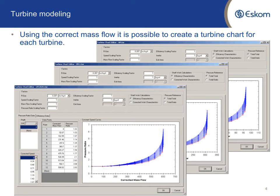This is just the mass flow through each turbine that I used to set up the turbine charts. This is taken from the heat and mass flow calculations. I worked out here the mass flow that's going to go through each section of the turbine, and I used these values to set up my turbine charts. The turbine charts will be in the next slide.